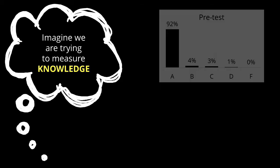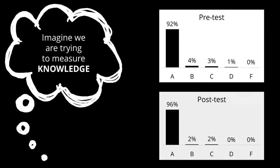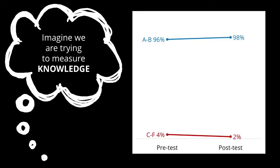Imagine we are trying to measure knowledge. We have a program or exhibit trying to teach people something. We give them a pretest and 92% of our sample gets an A. Are these people so smart that they don't need to learn anything? Probably not — more than likely our instrument is not sensitive enough to tease out those who know a lot from those who don't. Then we give them a post-test and A's went up to 96%. We create a graph showing changes in A's, B's, and C's to F's from pre to post-test. Did our program make a difference? It's hard to tell.